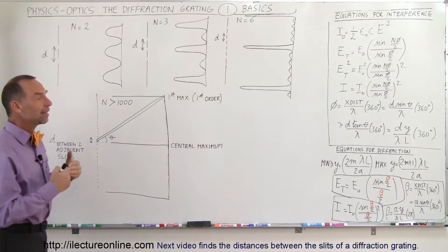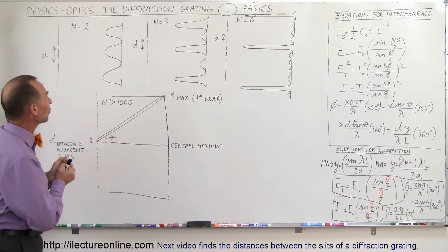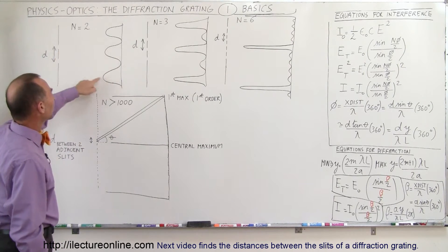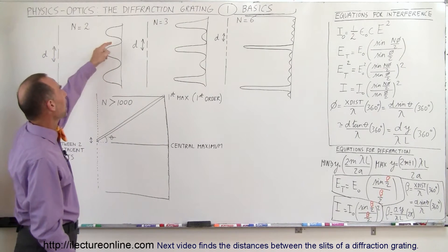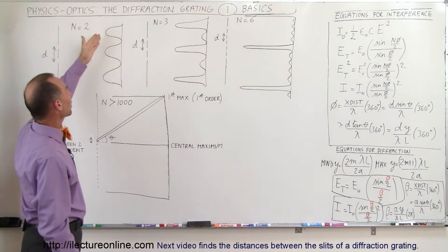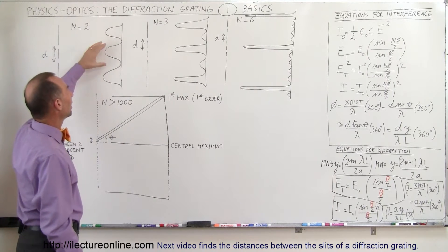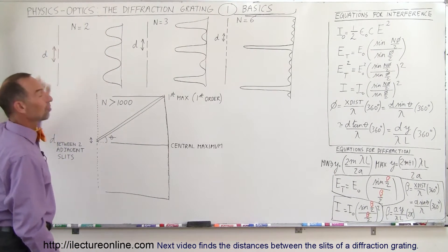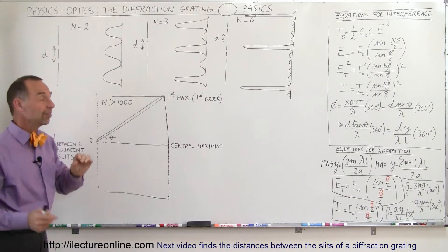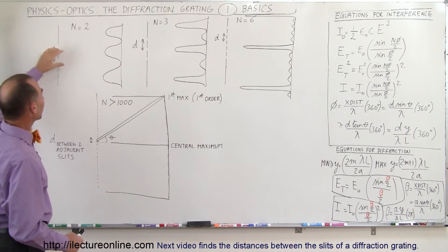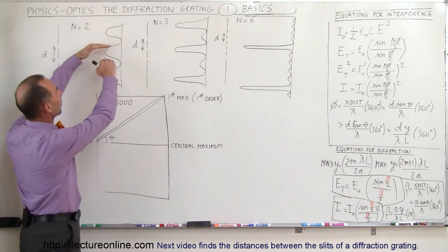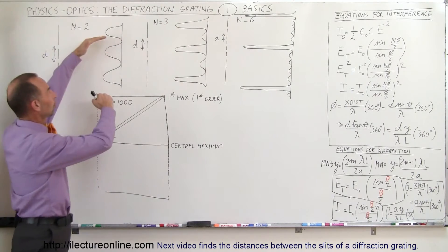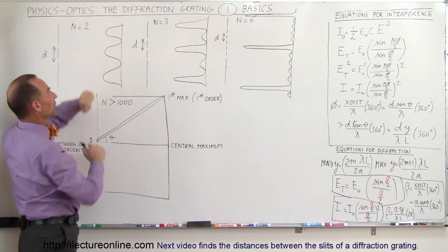The interference pattern we saw was that with two slits, the maxima were all about the same height and the distance between the maxima depended upon the distance between the slits. The closer the slits were together, the farther apart the maxima went; the farther apart the slits were, the closer the maxima went.